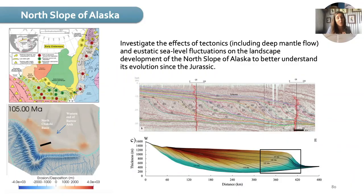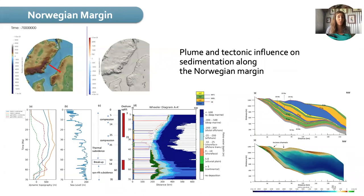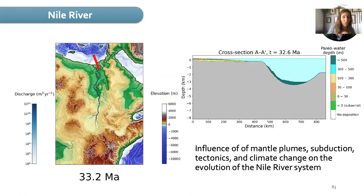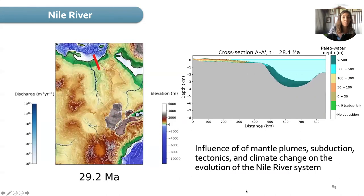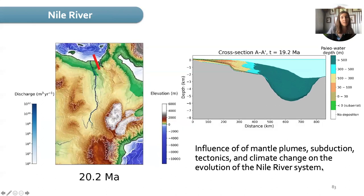In terms of models, Kian will show what he has done on the North Slope of Alaska during the Papua New Guinea session. I also worked on the Orange Basin in South Africa, trying to understand the impact of dynamic topography on its sedimentation. Su Chan worked on the Norwegian margin with the Equinor team — I really want to thank them because they brought all their knowledge on this margin and allowed us to constrain our model. She looked at the plume and tectonic influence on sedimentation along the Norwegian margin. Chris Alfonso worked on the Niger River evolution through time, with Chevron, looking at the influence of mantle plumes, subduction, tectonics, and climate change on the Niger River system.